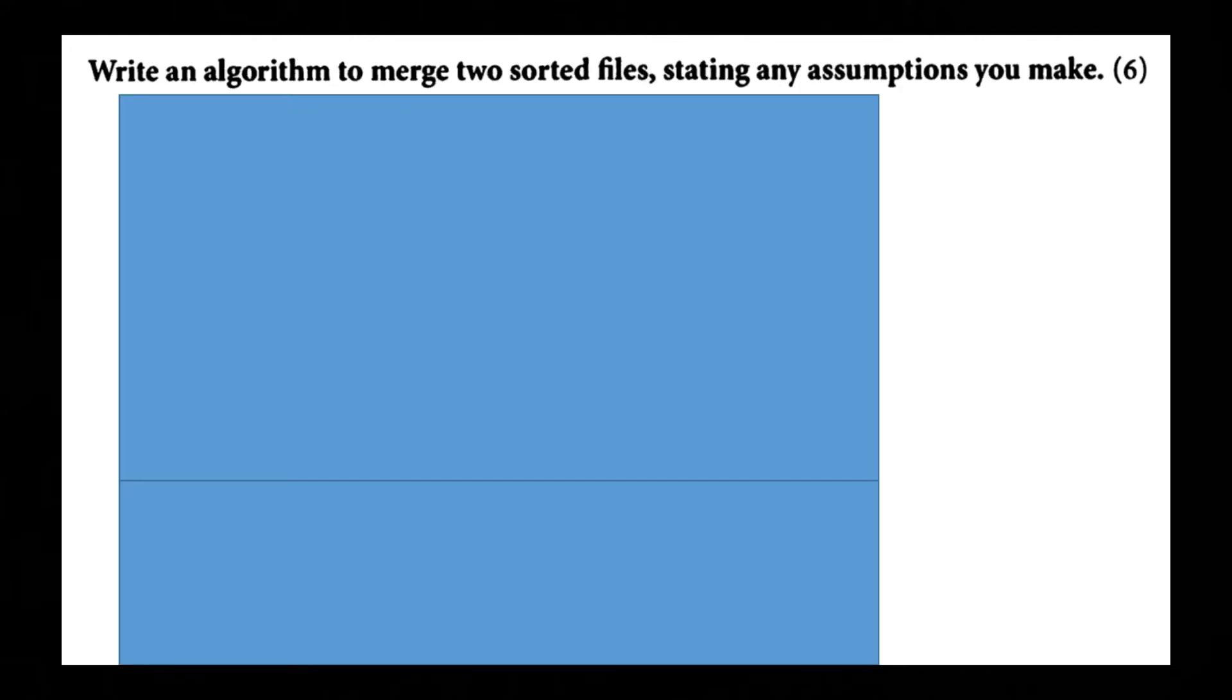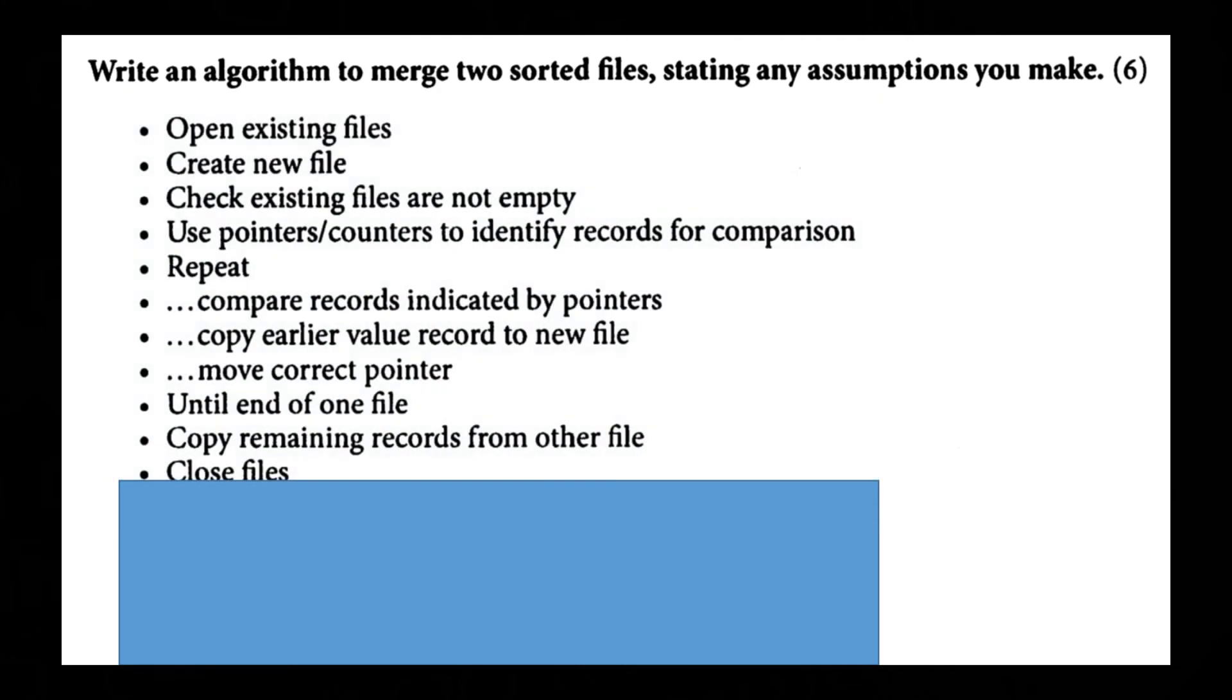Write an algorithm to merge two sorted files stating any assumptions you make. Open an existing file. Create a new file. Check to see if existing files are not empty. Use pointers or counters to identify records for comparison. You repeat. Compare records indicated by pointers. Copy earlier value record to new file. Move correct pointer until end of one file. Copy remaining records from other file. Then you close the file.